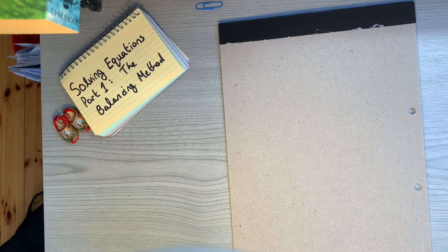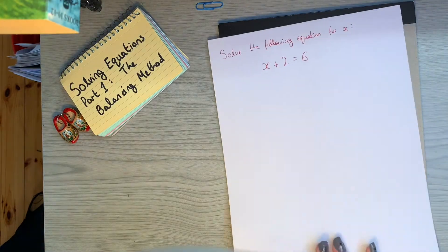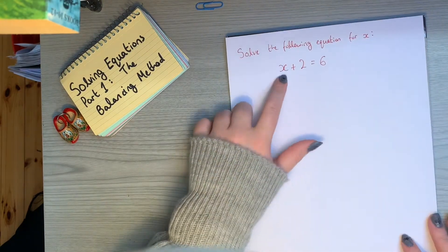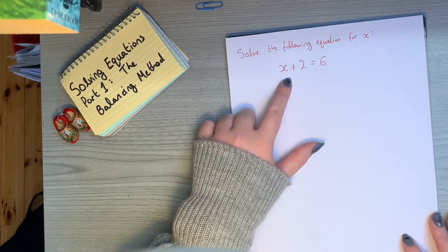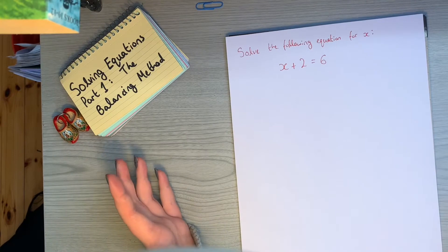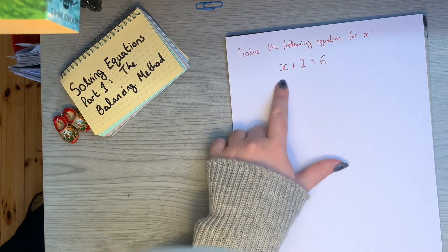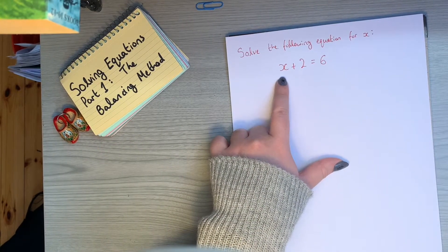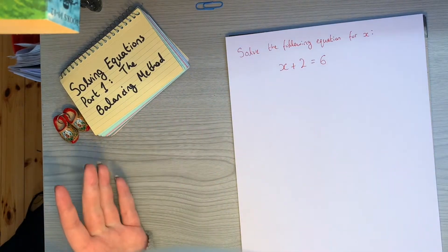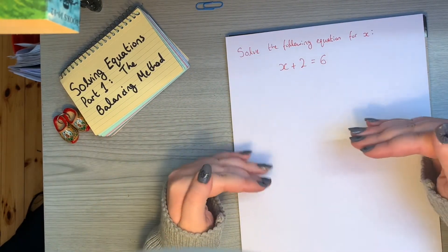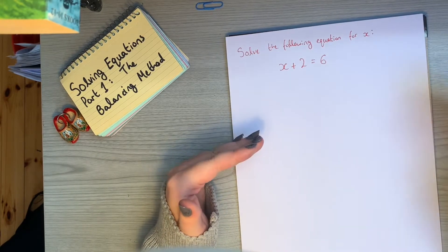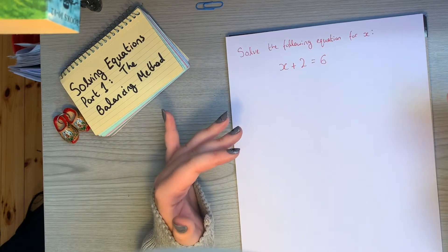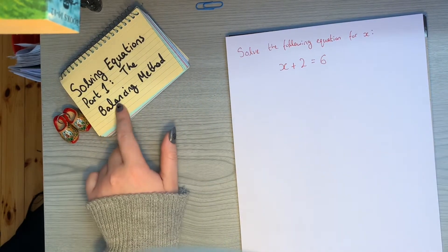Today we're going to look at solving equations using the balancing method. If you're given an equation and you have to solve for the unknown or variable x, something simple like x plus 2 equals 6 — it's very clear that x is going to be equal to 4, because 4 plus 2 gives me 6. But as we get on to more difficult equations, it won't be very clear what x will be, so we need a method to solve them.